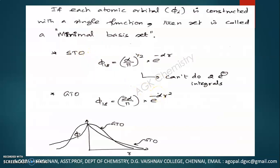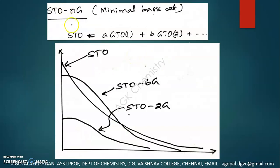What scientists did was take the linear combination of many Gaussian type functions to form one Slater type orbital function. To form one Slater type orbital, they took many Gaussian type orbitals and took the linear combination of these to form one Slater type orbital. How many Gaussian type orbitals are combined in one Slater type orbital is represented as STO-NG, where N can be 1, 2, 3, 4, etc.